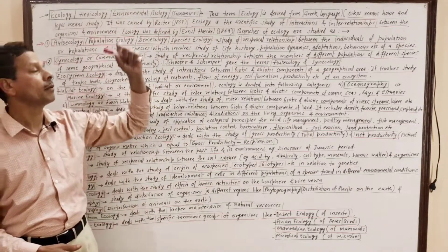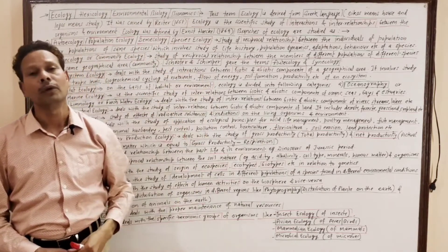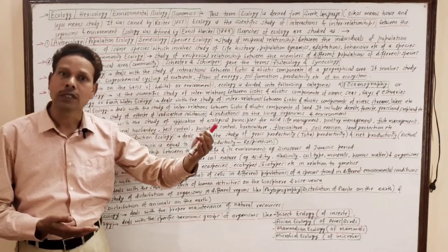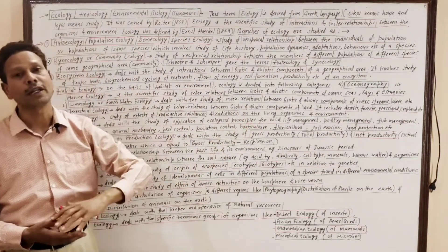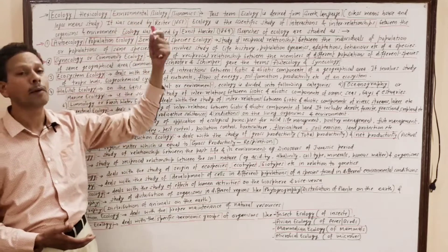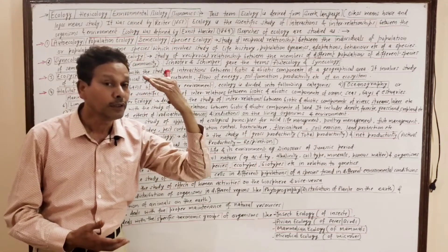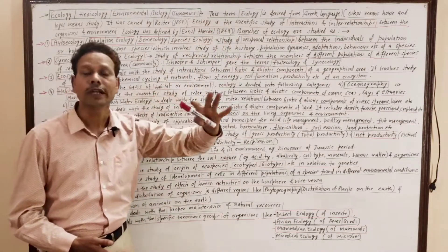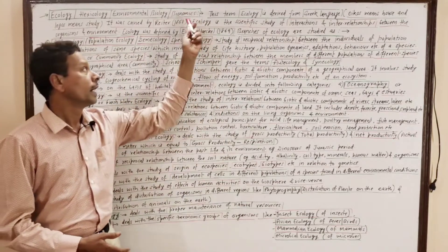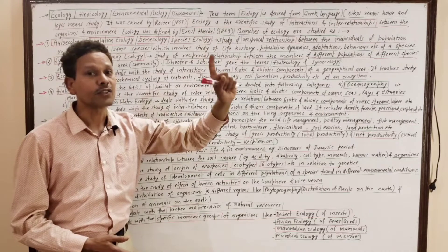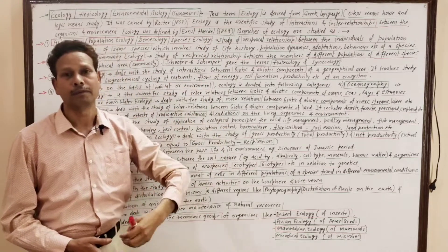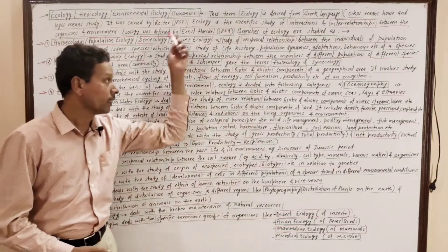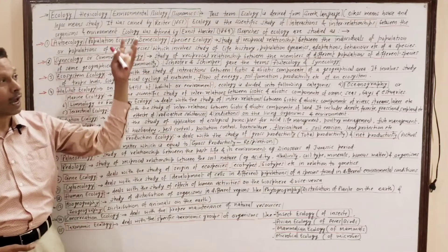This is a general introduction of ecology — also known as hexecology, environmental biology, and bionomics. This term is derived from the Greek language and is made up of two words: oikos meaning house, and logos meaning study. It was coined by Ritter in 1868 and defined by Haeckel in 1869 as the scientific study of interactions and interrelationships between organisms and environment. These are the different branches of ecology we have studied.